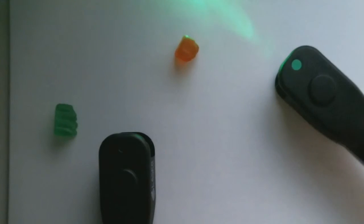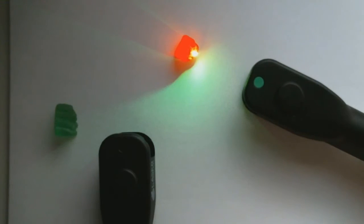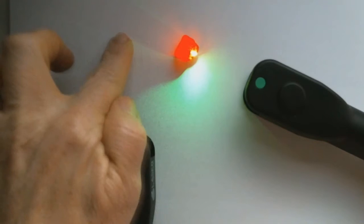Now if I use a red gummy bear, what do you think happens? Look how interesting. Is any light allowed to pass through the red gummy bear? No. In fact, you even see a shadow back here, don't you?